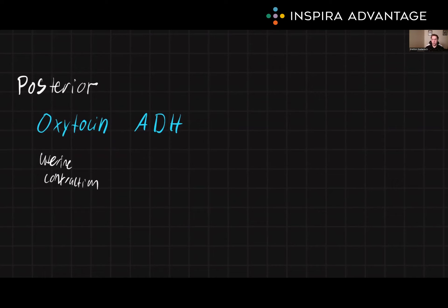And then we have ADH, or antidiuretic hormone. This regulates water balance in the body by controlling urine production. It promotes water reabsorption in the kidneys and thus helps to maintain proper fluid balance and blood pressure throughout the body.